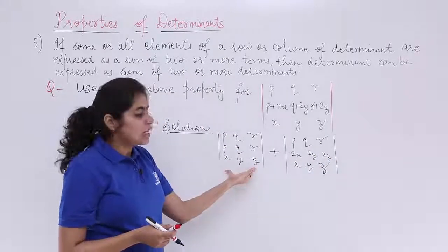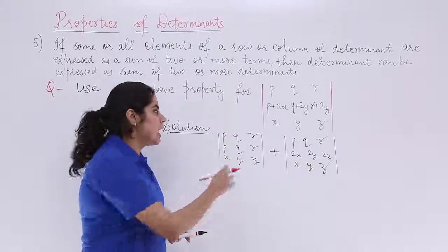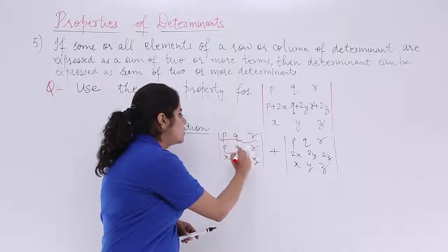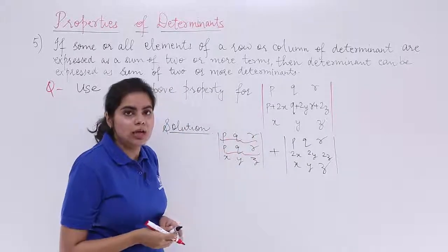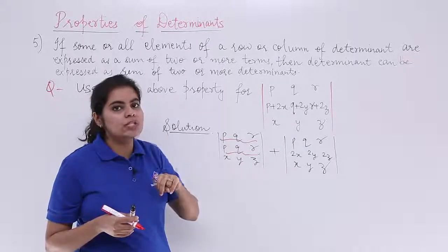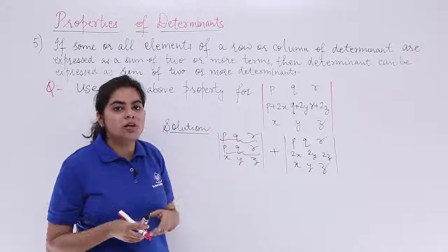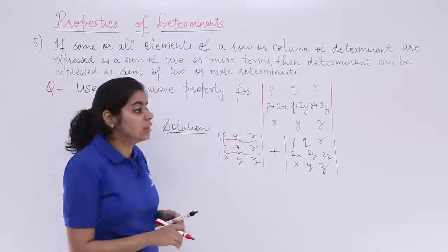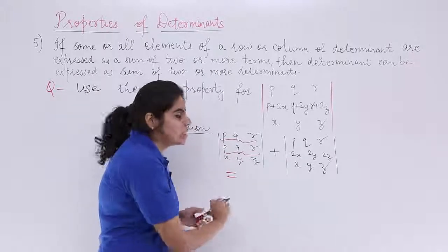Now this determinant as you can see has identical rows. The first row and the second row is equal and from the previous properties that we understood earlier, if any two rows are identical or any two columns are identical, the value of the determinant is what? It is zero.